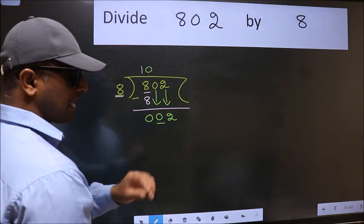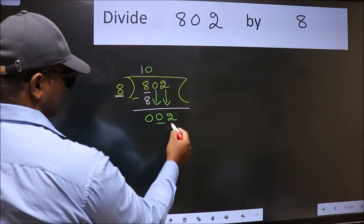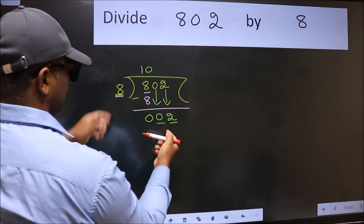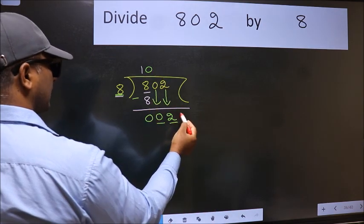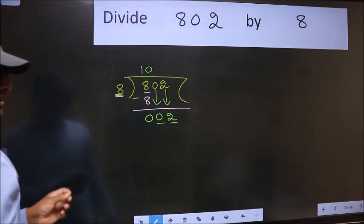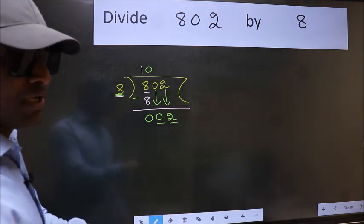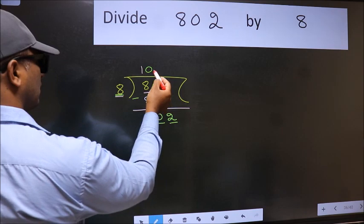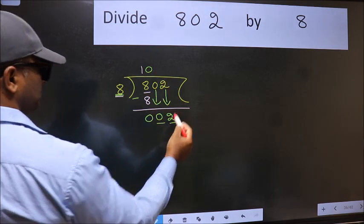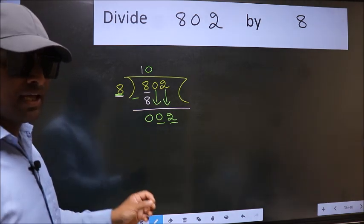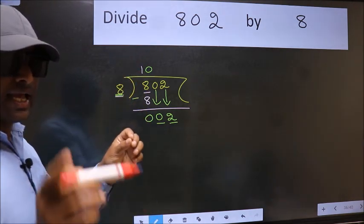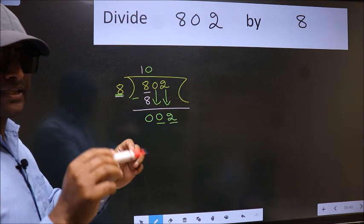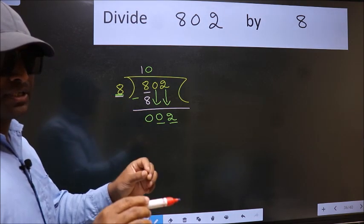After this step, the mistake happens. Here we have 2 and here 8. 2 is smaller than 8, so what many do is directly put a decimal and take 0, which is wrong. Why? Because you just brought this number down, and in the same step, you want to put a decimal and take 0. I repeat: bring down the number and put decimal take 0 — both at the same step — you should not do this.